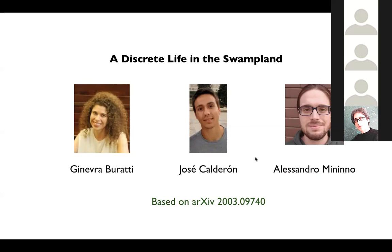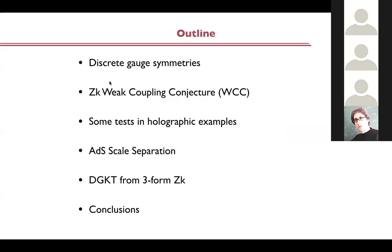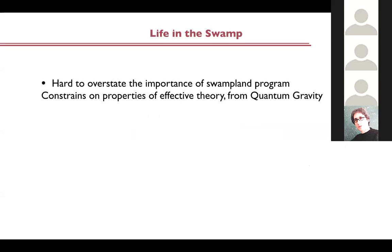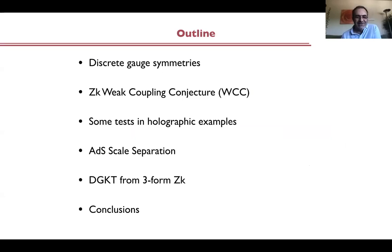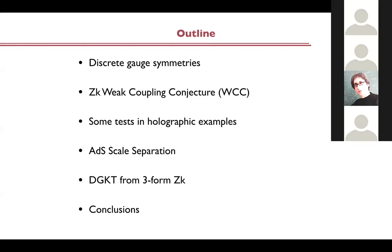Let me give you some outline of the things I'd like to talk about. I'd like to talk about discrete gauge symmetries, and based on that, in the spirit of the Swampland program, I will propose a conjecture which has to do with what happens with gauge couplings when you have discrete gauge symmetries in your effective theory. Then I will discuss supersymmetric ABS, and later on I will have some discussion of the role of some discrete symmetries having to do with scale separation in de Sitter and the anti-de Sitter distance conjecture. And then I will conclude.